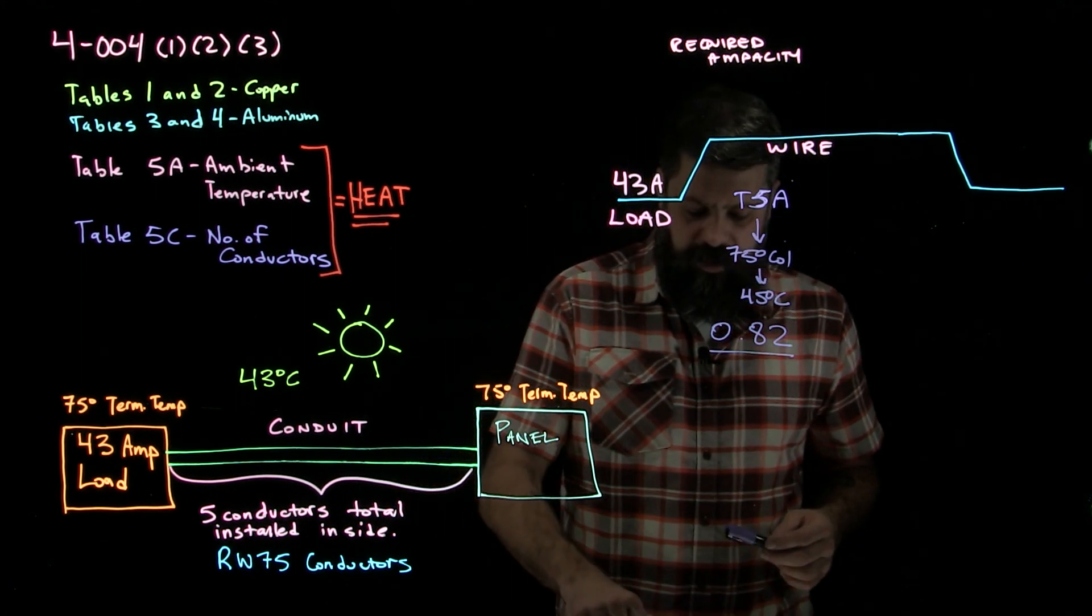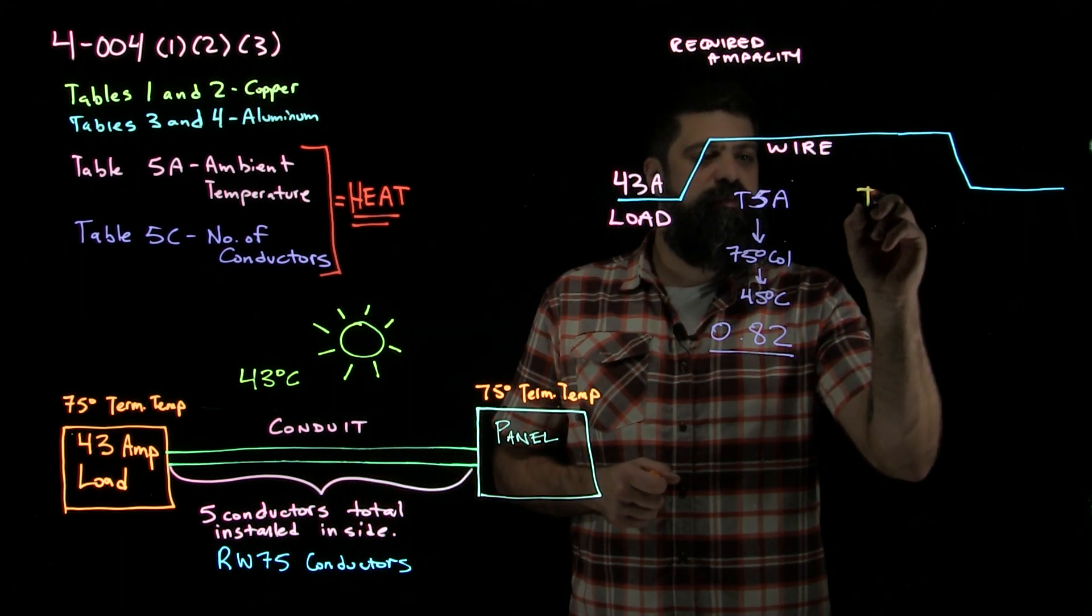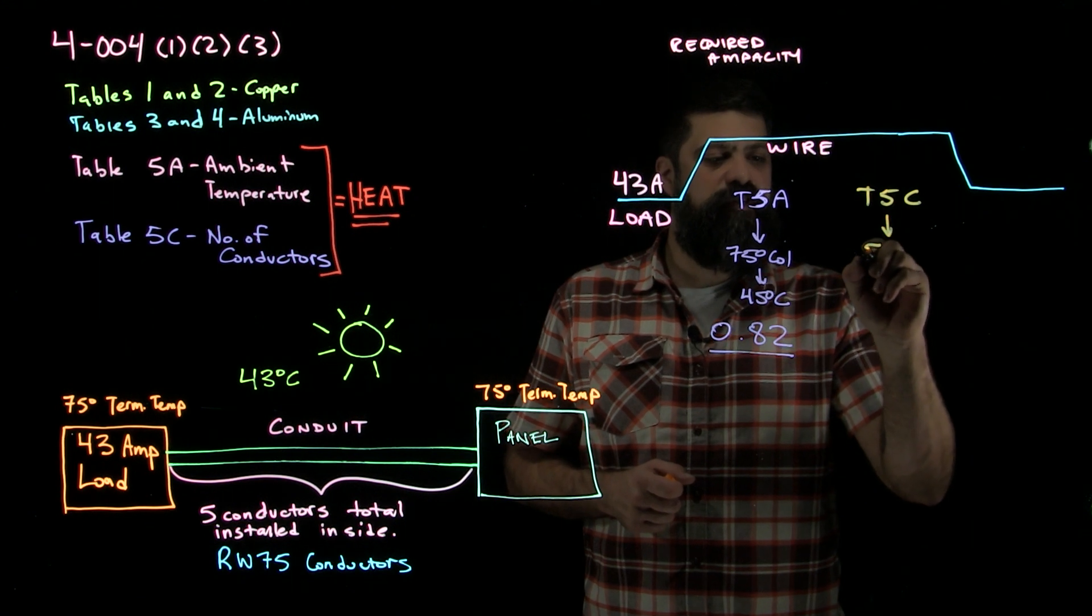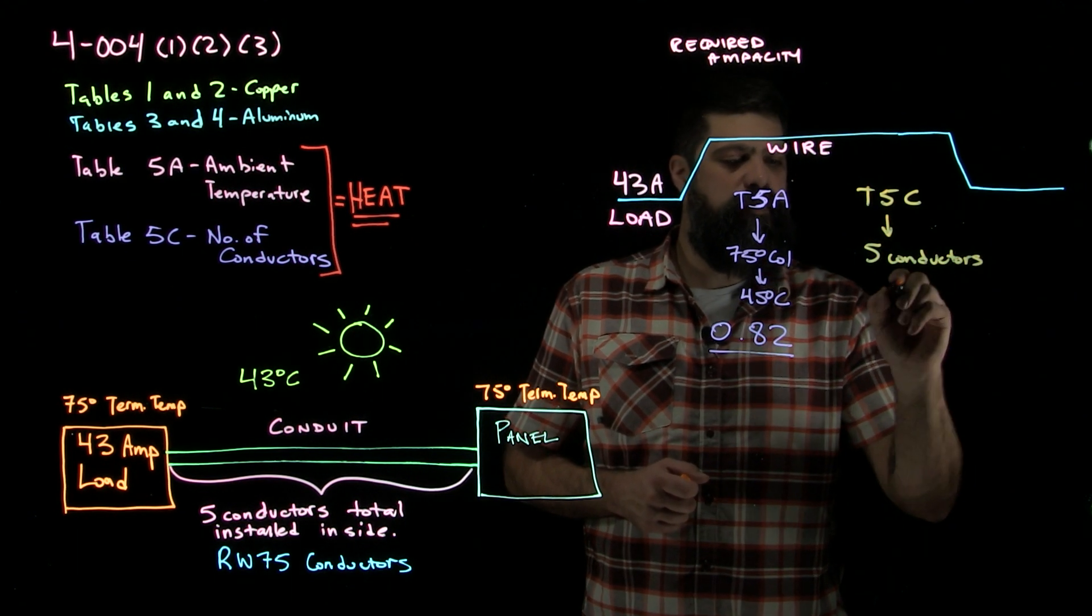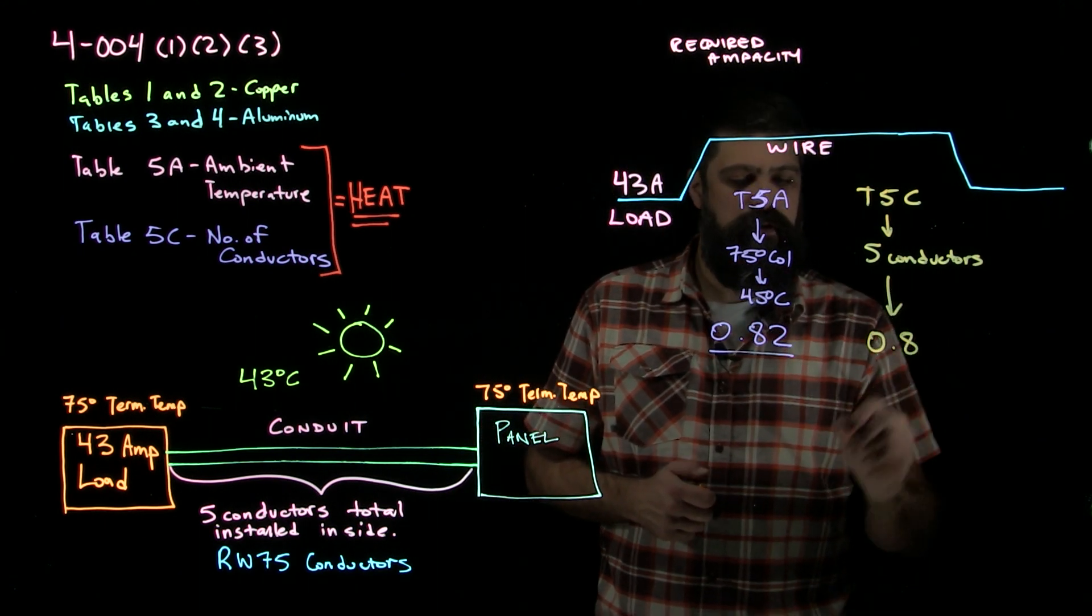So the next one that we'll look at then is table 5C. So we have five conductors in here. In table 5C, that range of conductors, so five conductors, that range that it falls into gives me a derating factor of 0.8.